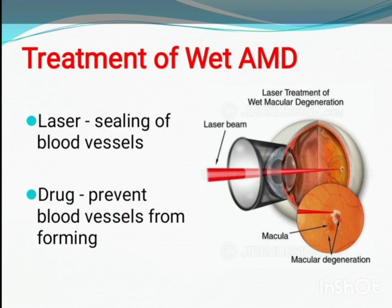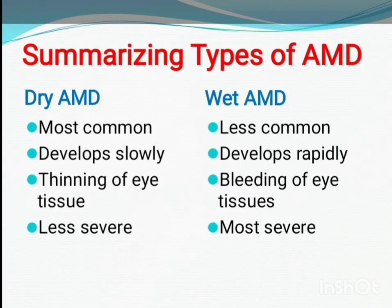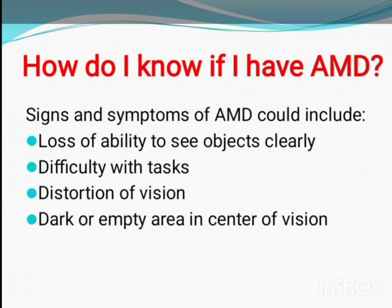There are two major treatments for wet AMD. One treatment uses a laser to seal a leaking blood vessel at the back of the eye. The other involves a drug that prevents new blood vessels from forming. Both treatments involve regular follow-up visits to your doctor. To summarize: dry AMD is slower, more common, and less severe; wet AMD is faster, less common, and more severe. Although different, both types affect the macula and therefore both take away from your central vision.